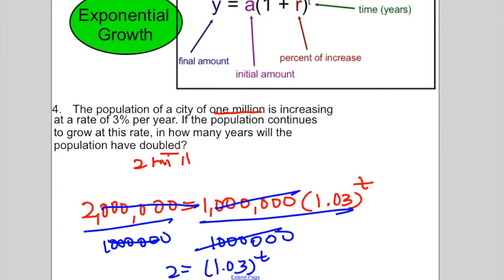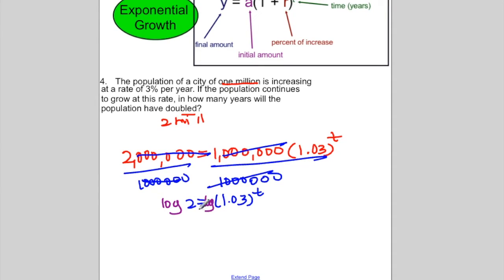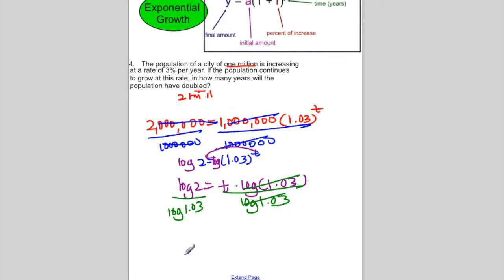To solve for t, we use our log. So I would log on both sides. So I have log of 2 equals, I bring the t down in front, t times log of 1.03. I would divide both sides by log of 1.03. And so t, if I go ahead and type it into my calculator, will be 23.540. And I would recommend that you try it, but if you do, that's what you'll get. And my time is in years, so label it years.